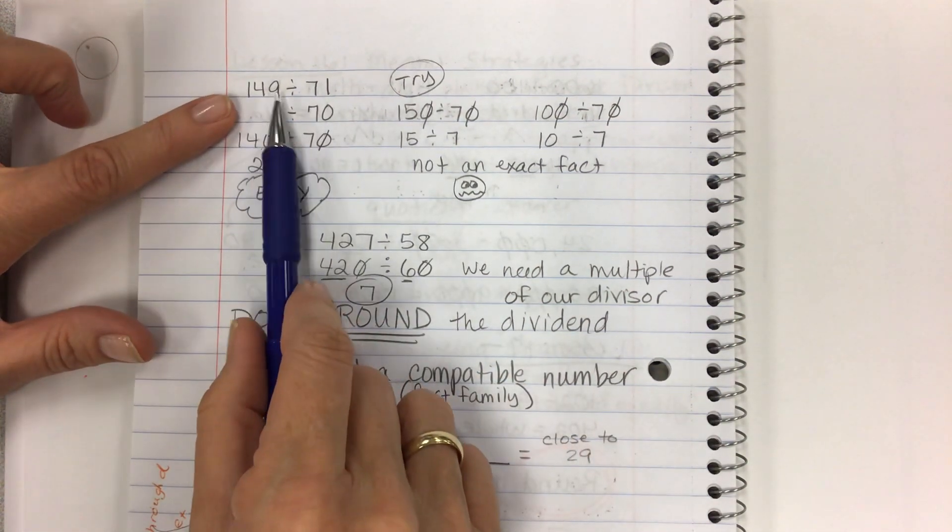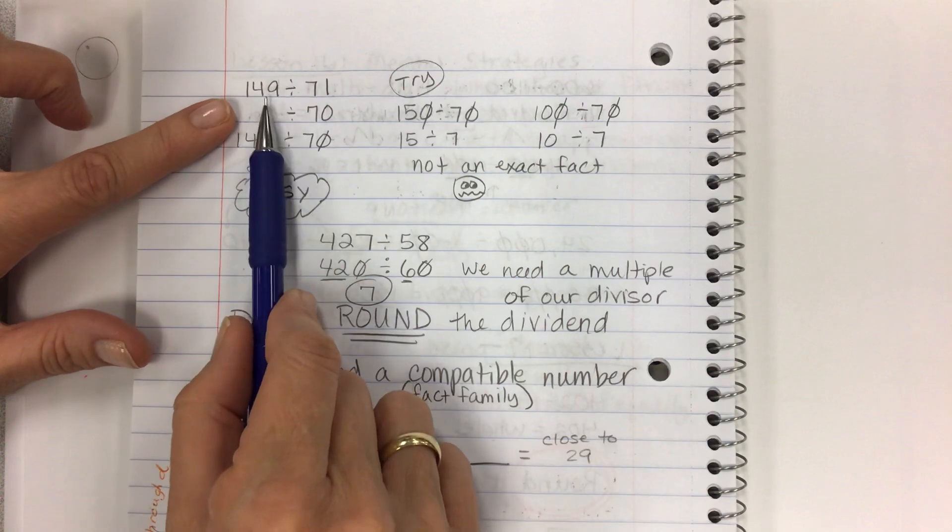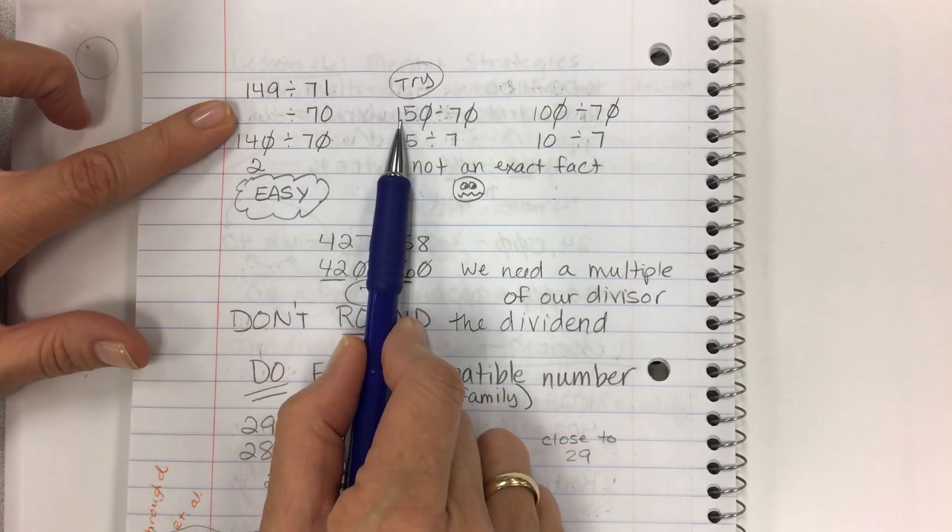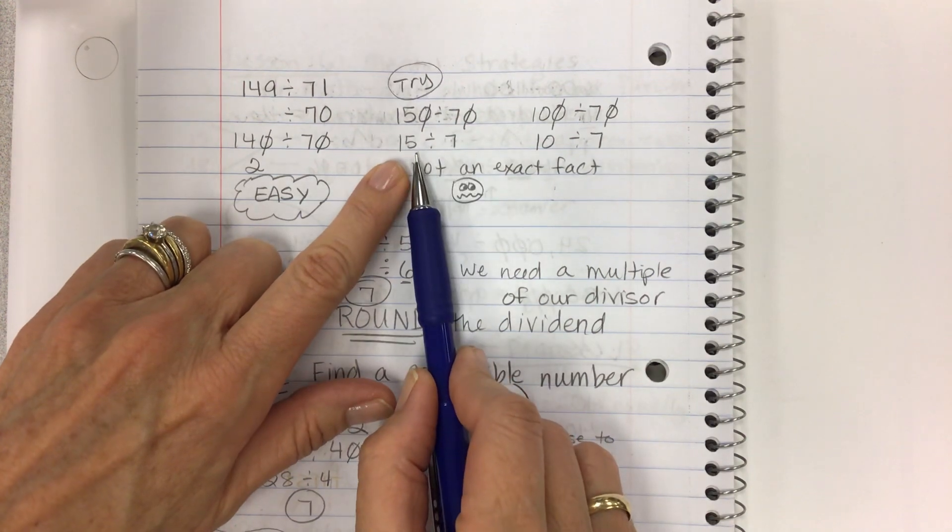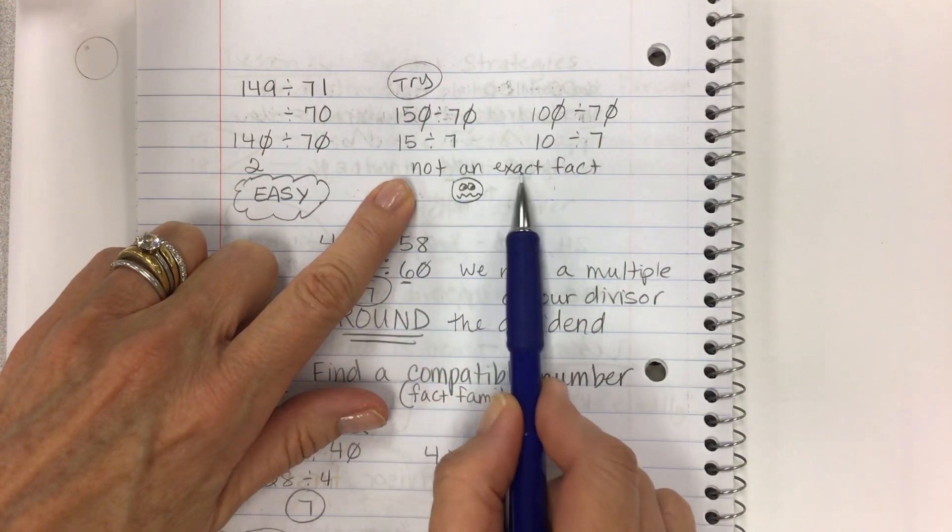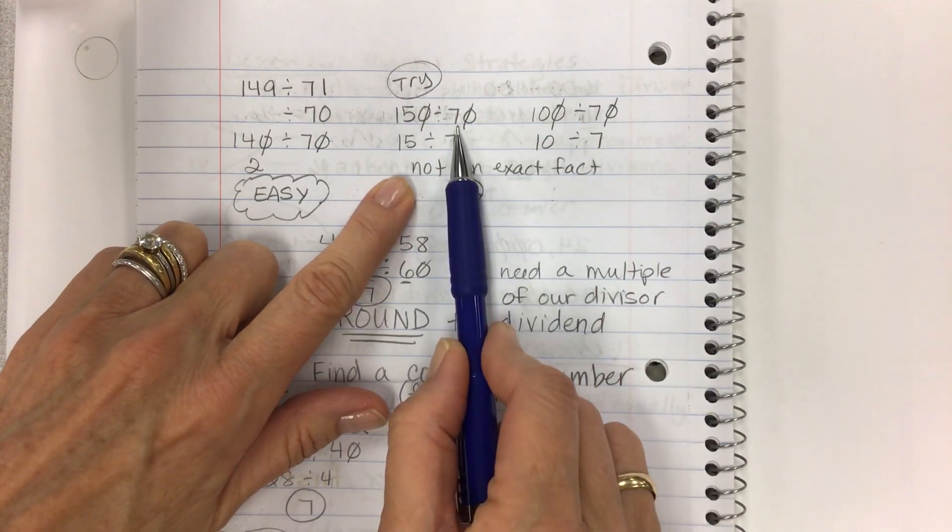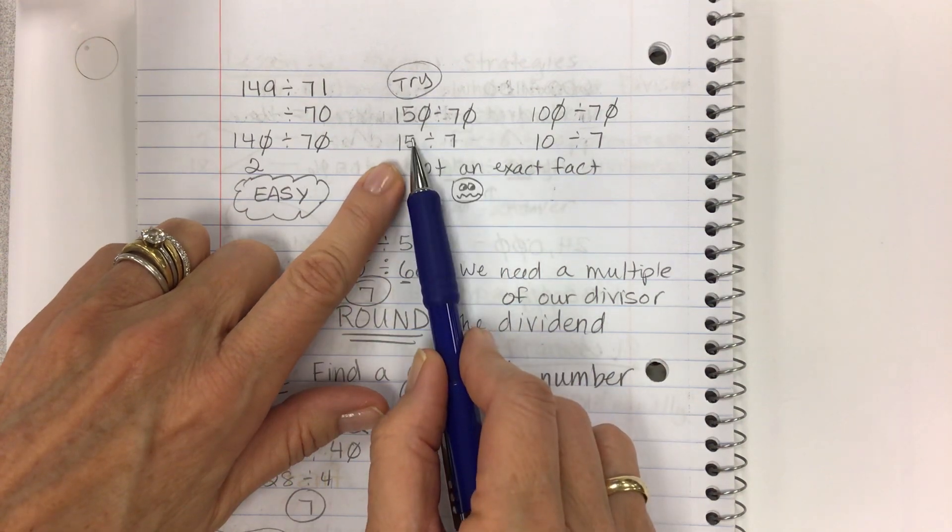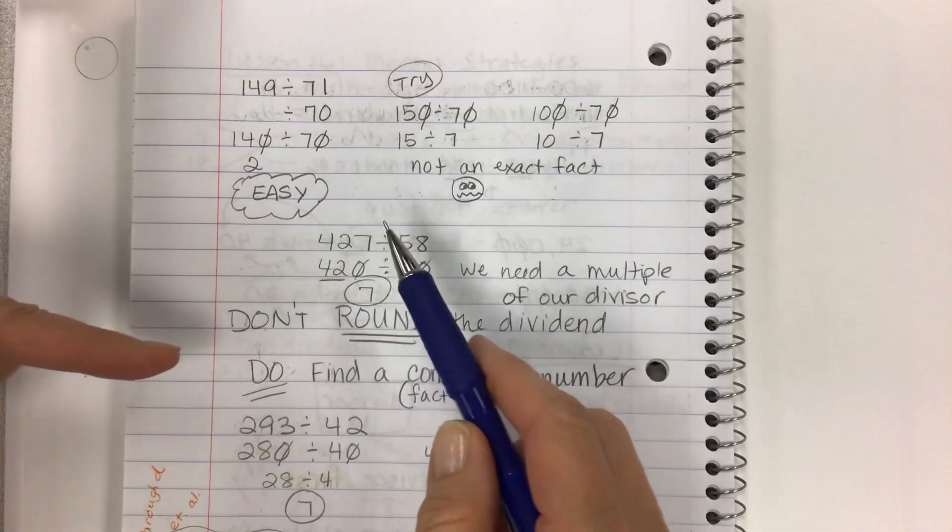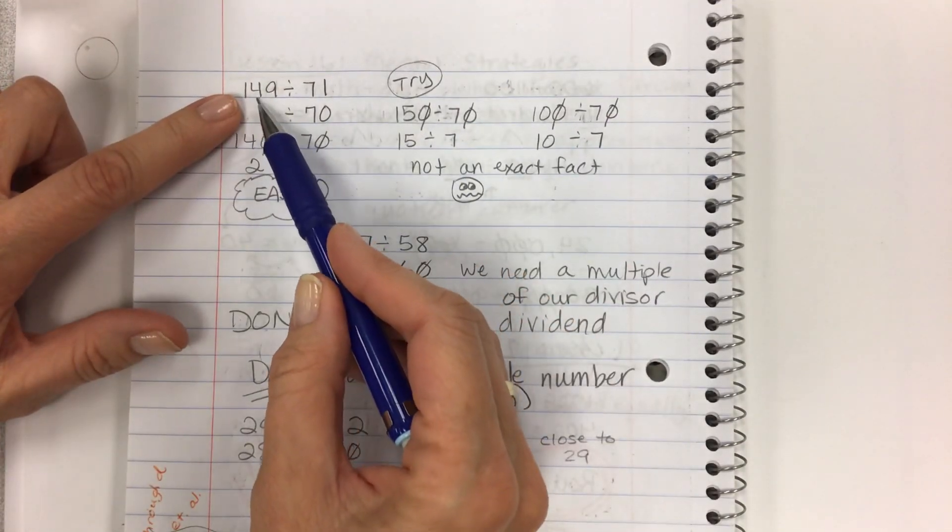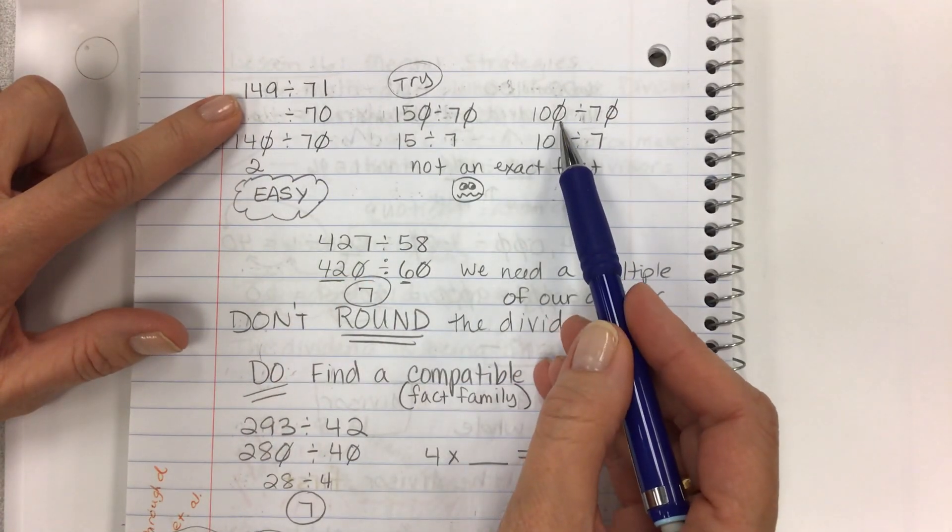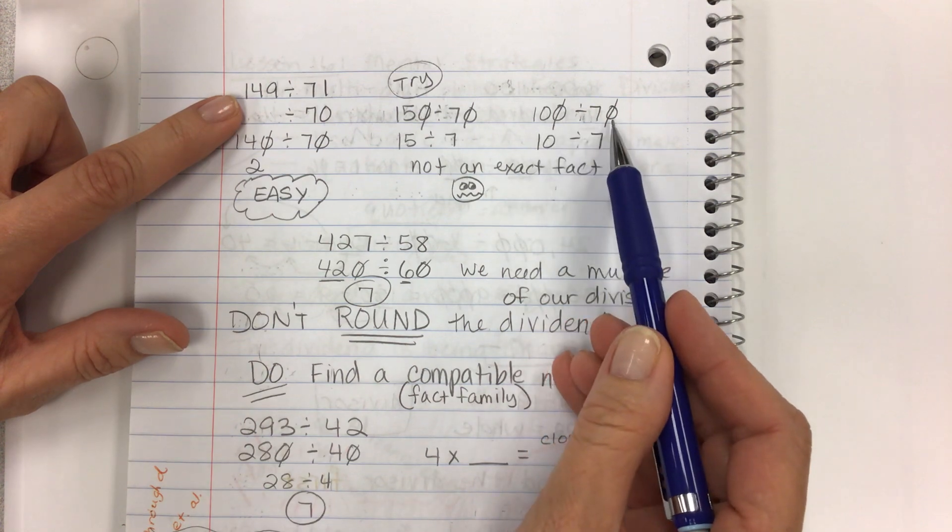Come up with a really simple fact that is a multiple of your rounded divisor. Now, some kids will say, well, I want to round 149 to 150 because I know how to round, and this rounds to 150. Well, you could try it, but 15 is not an exact fact of 7. It's not an exact multiple.